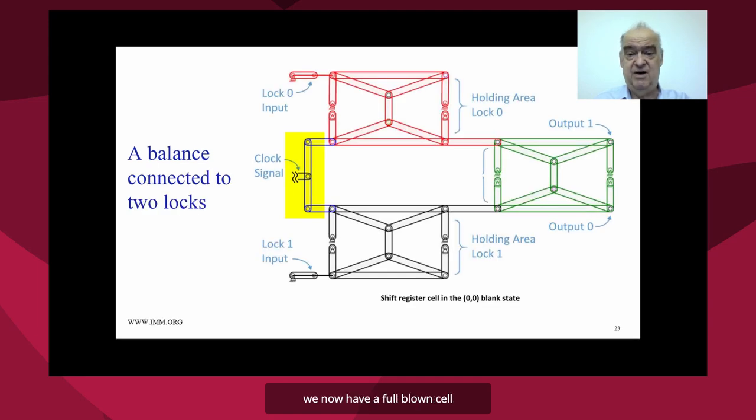We now have a full-blown cell. And the full-blown cell consists of three locks: the top lock, the bottom lock, and the output lock.